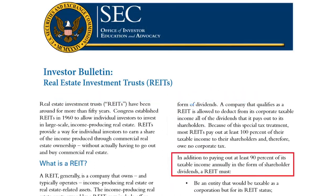In the US, REITs usually need to distribute 90% of their income to unit holders, while in Canada REITs are not required to pay 90% to unit holders and the payout ratio is actually dependent on the REIT structure.